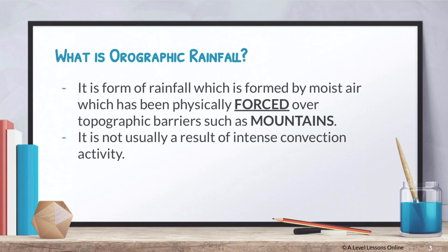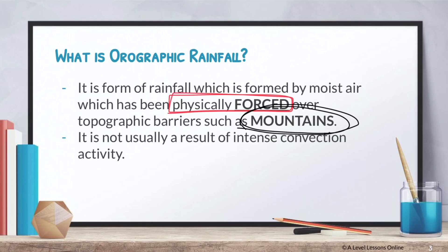What is orographic rainfall? Orographic rainfall is essentially a form of rainfall formed by moist air which has been physically forced. This is the key characteristic of orographic rainfall - this is what causes it to stand out from convectional rainfall. It is forced along areas such as topographic barriers, basically mountains. It is not usually a result of intense convection activity.